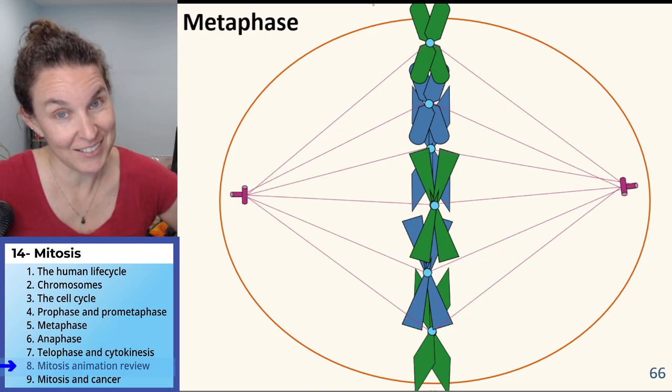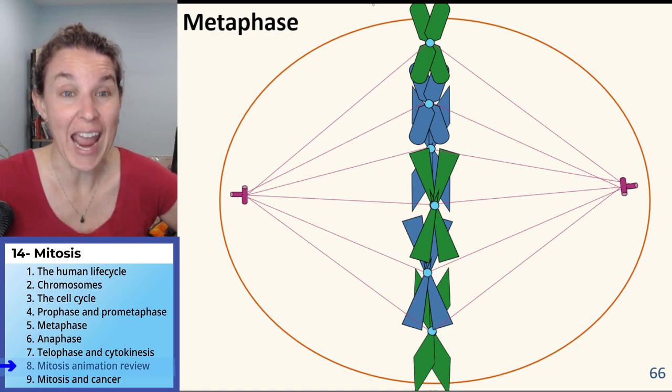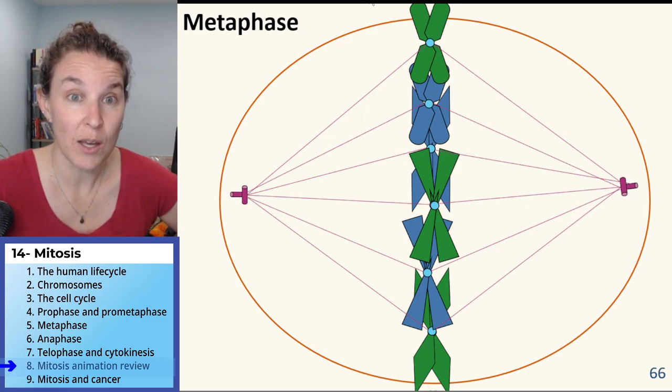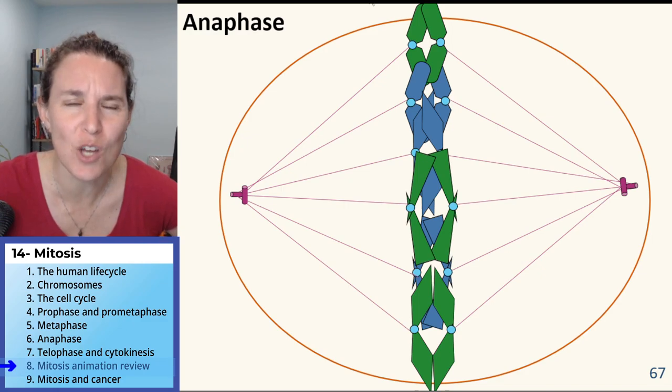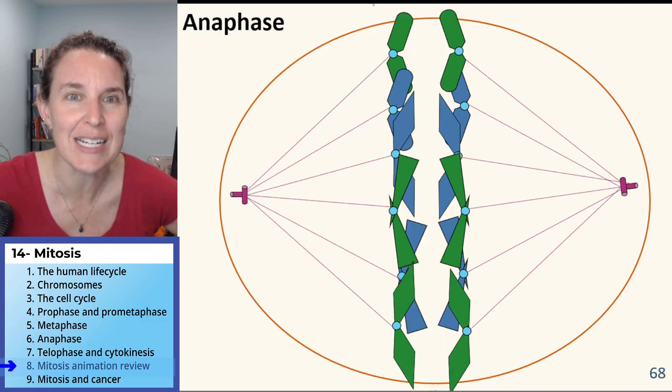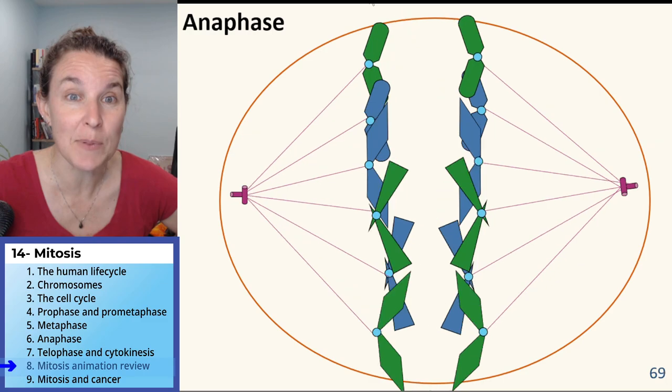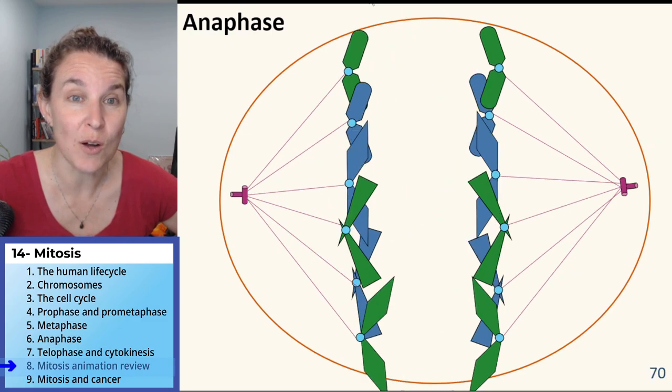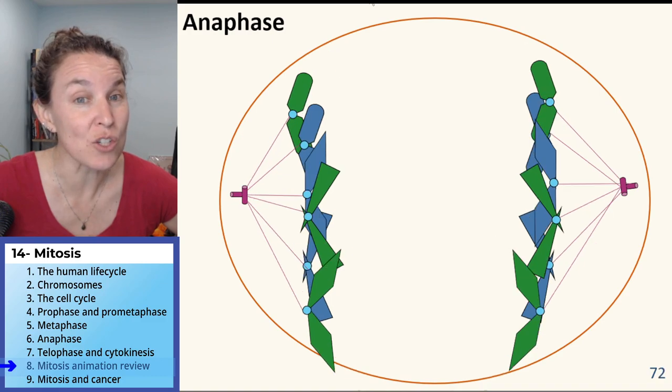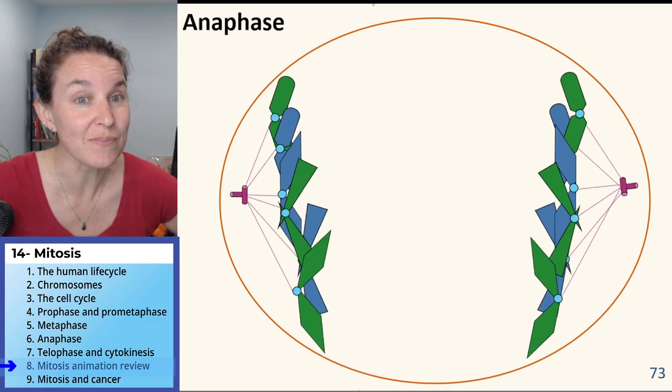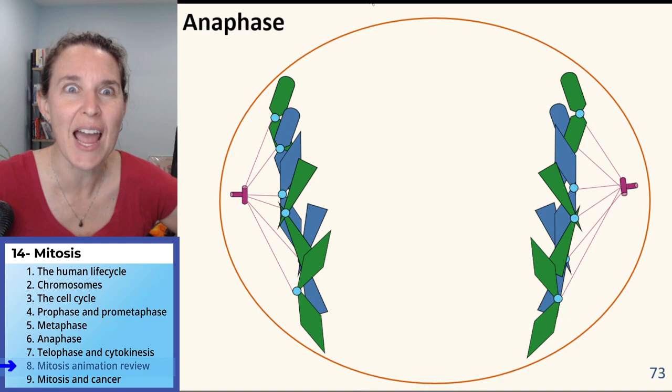Anaphase. What's going to happen? Watch. Pull. Shorten the spindle fibers. Go centrioles. Pull. It's like tug of war, except each chromosome splits. Do you see, though, they get, now is this really still anaphase or could we say that we're kind of in telophase right now? Doesn't look like you can get much closer to the pole.